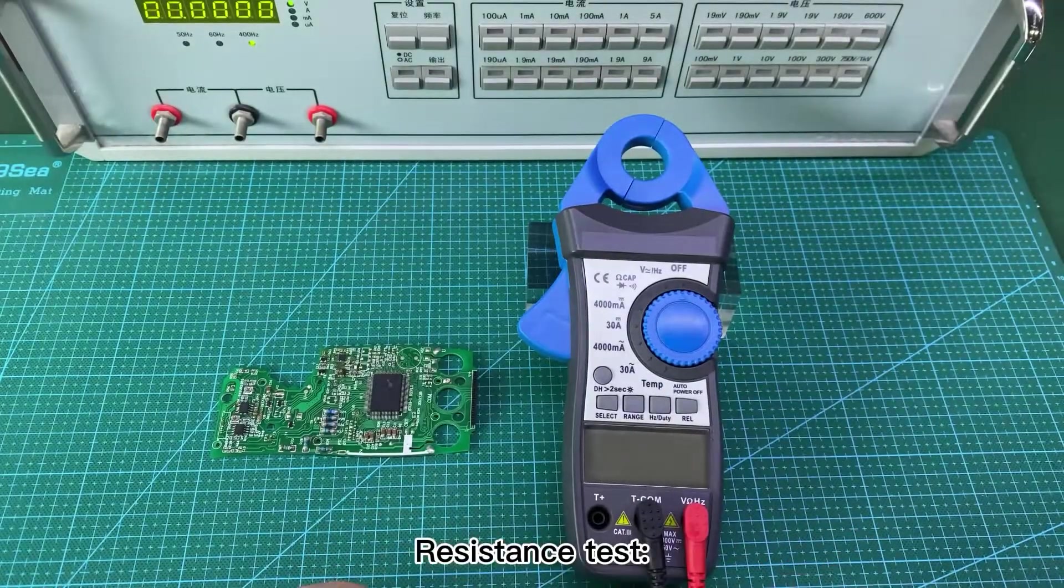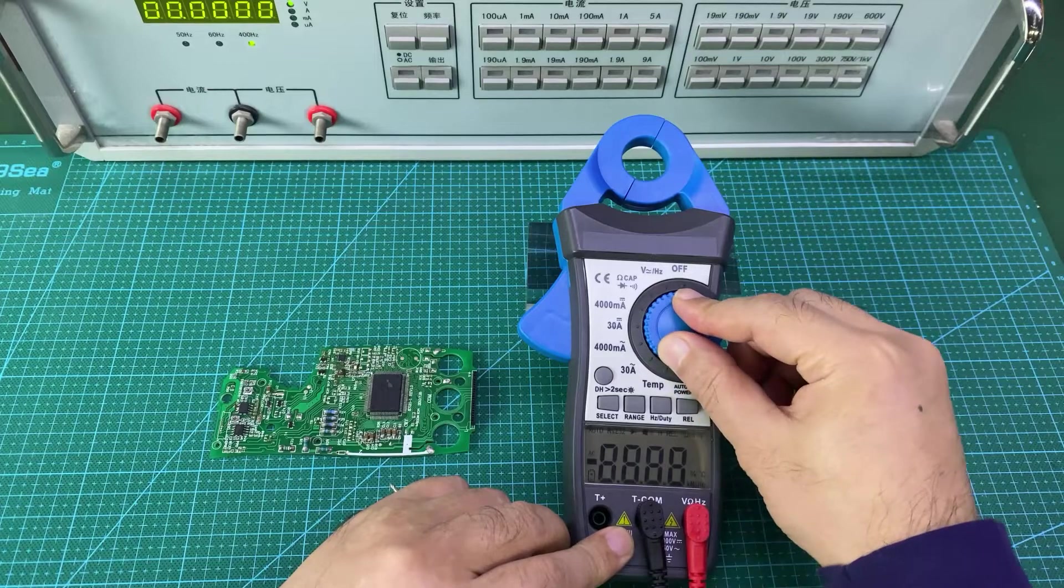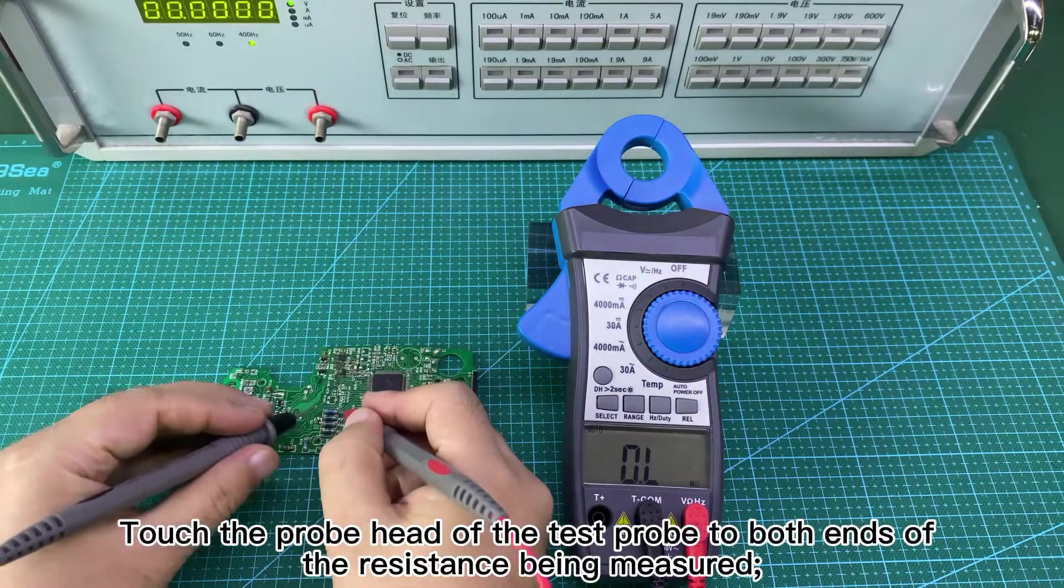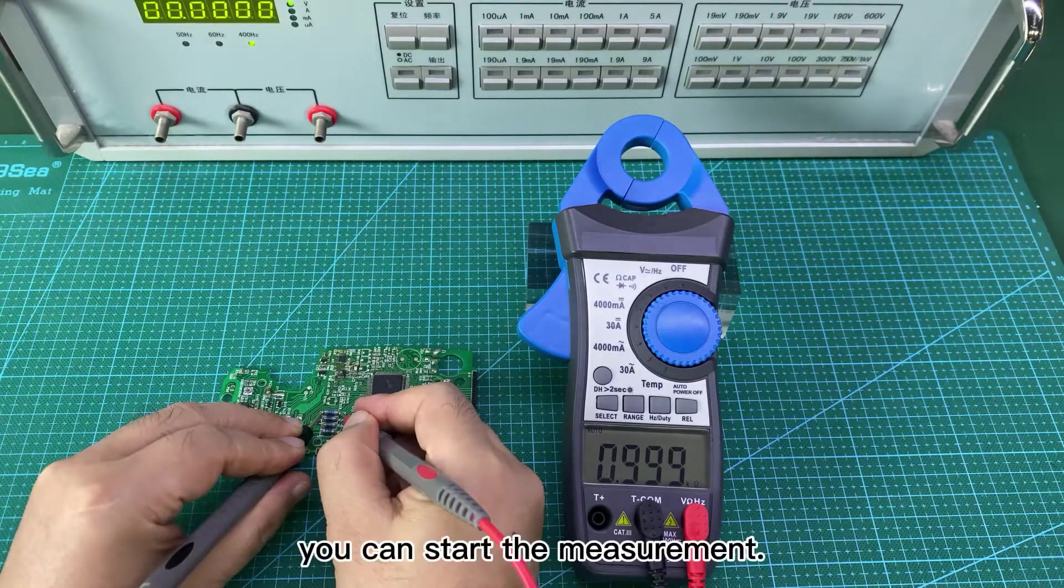Resistance test. Rotate the dial to the resistance position. Touch the probe head of the test probe to both ends of the resistance being measured. You can start the measurement.